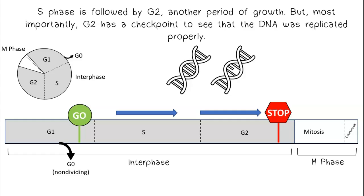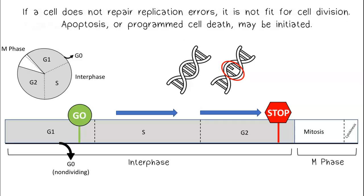S phase is followed by G2, another period of growth. But most importantly, G2 has a checkpoint to see that the DNA was replicated properly. If a cell does not repair replication errors, it is not fit for cell division. Apoptosis or programmed cell death may be initiated.